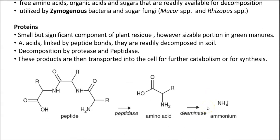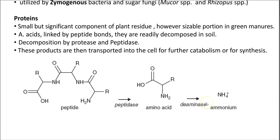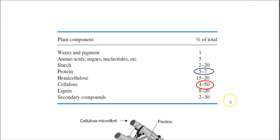The next component is the soluble portion of proteins. It is a significant component of the plant residue and forms a sizable portion in the green matter. Proteins are made up of amino acids that are linked together by peptide bonds. They can be readily decomposed in the soil with the help of special enzymes such as proteases and peptidases. The degraded products, such as ammonia or ammonium formed due to degradation of proteins, can be effectively transported inside the cell and metabolized by the microorganism.